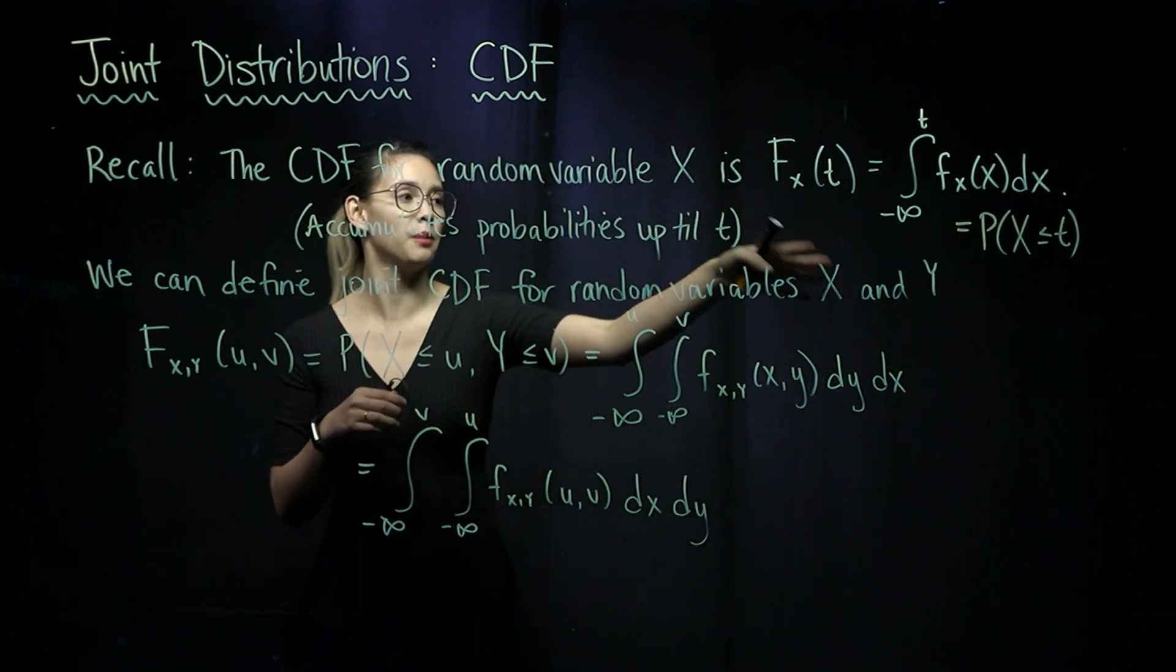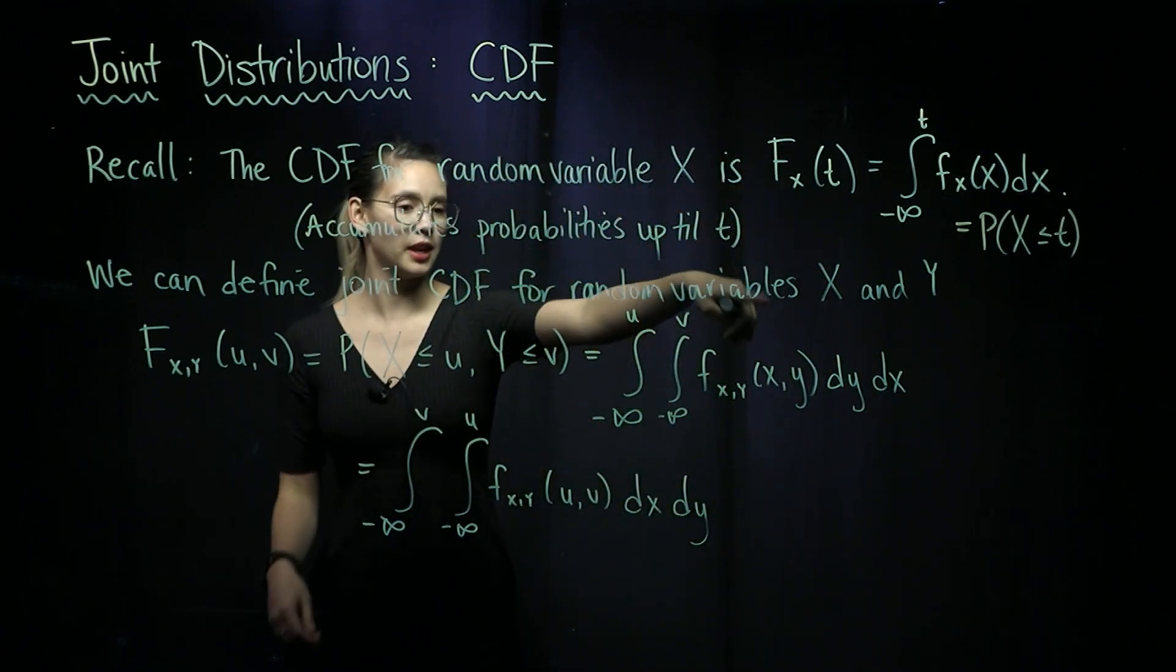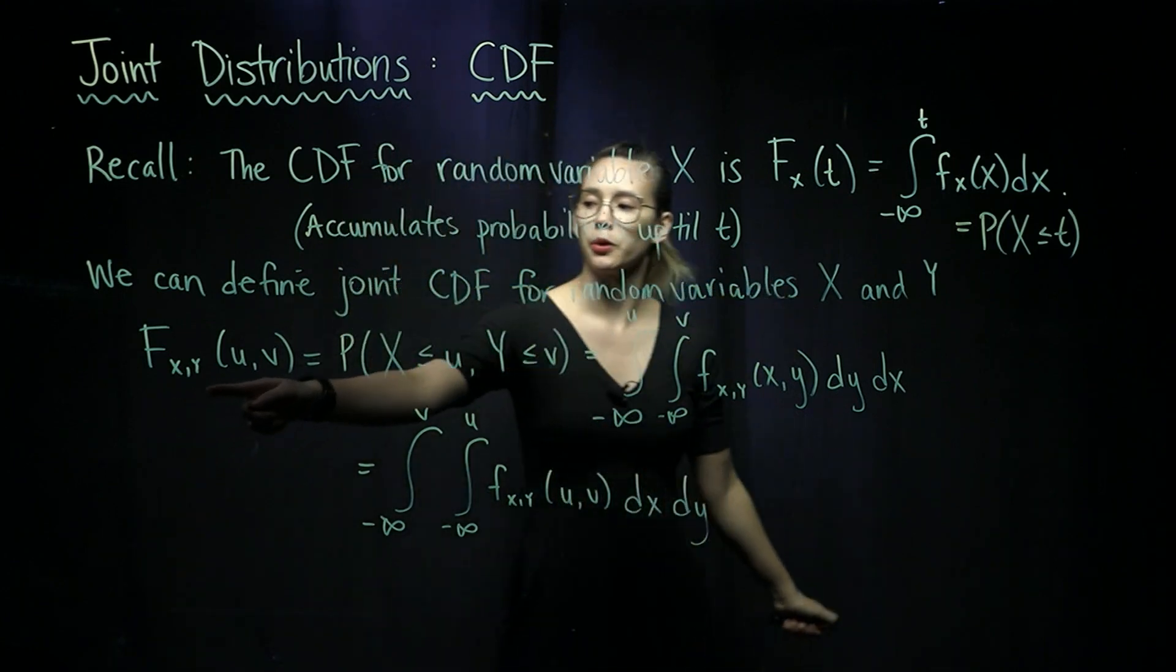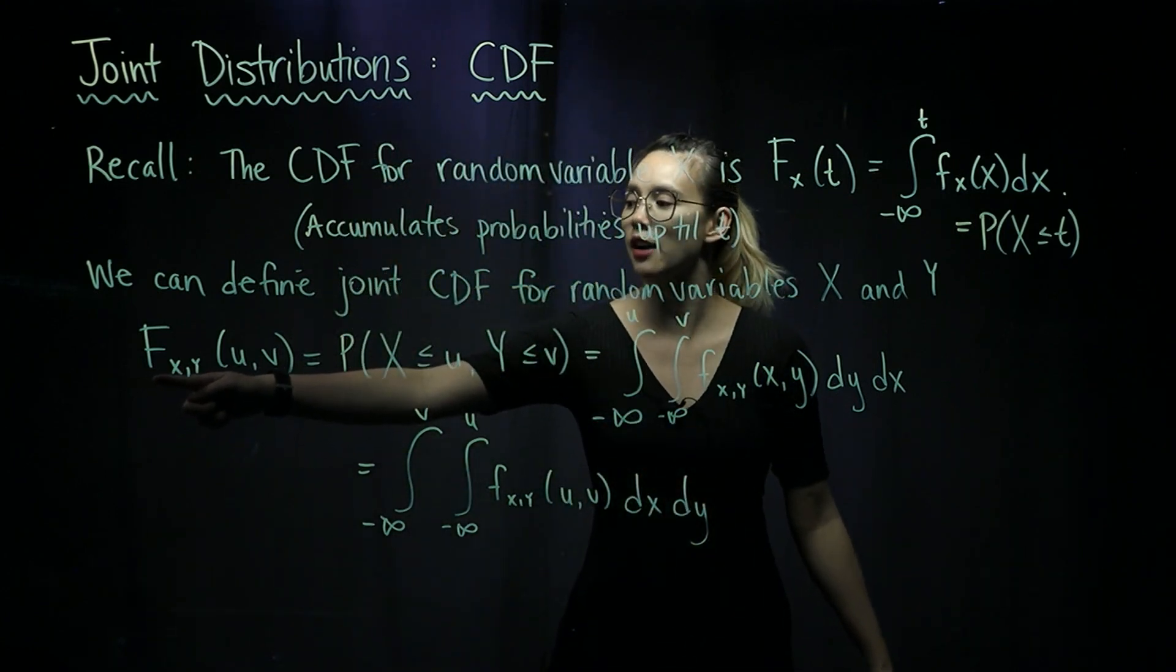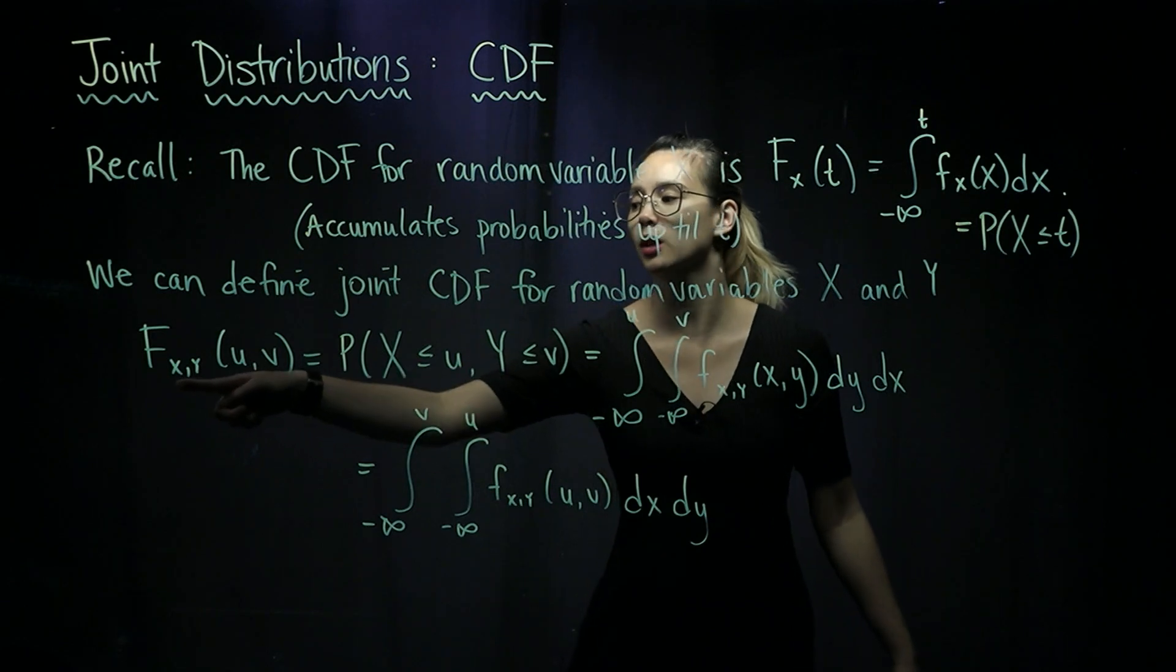So we can come up with the same thing if we have two random variables, X and Y. What we're going to do now is have our capital letter F, and then we'll have X and Y in the subscript.